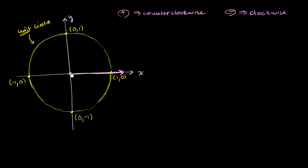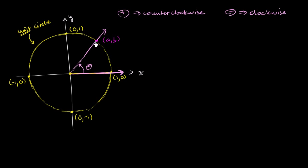So a positive angle might look something like this. This is the initial side, and then from that I go in a counterclockwise direction until I measure out the angle, and then this is the terminal side. This is a positive angle theta. And what I want to do is think about this point of intersection between the terminal side of this angle and my unit circle. Let's just say it has the coordinates a comma b — the x value where it intersects is a, the y value is b.